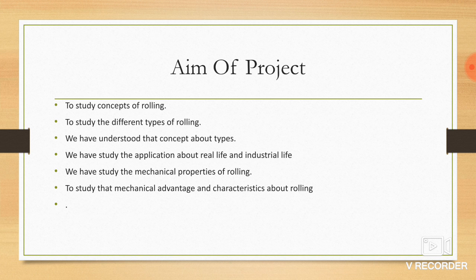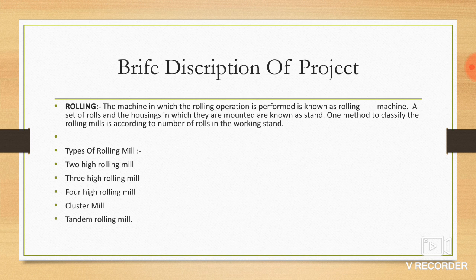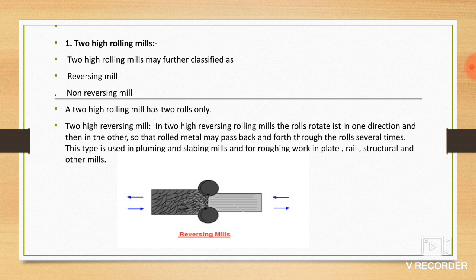Brief description of micro project: rolling, the machine in which the rolling operation is performed is known as a rolling machine. Types of rolling mill: two high rolling mill, three high rolling mill, four high rolling mill, cluster mill, tandem rolling mill. First, two high rolling mill.